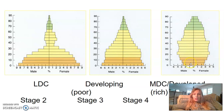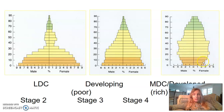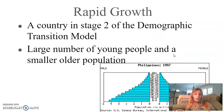In stage four — a wealthy MDC — the pyramid can be barely growing with a small bottom but slow growth, and a wide middle and top reflecting high life expectancy, as seen in the United States. It could also be completely rectangular, representing zero growth, or an inverted triangle representing negative population growth — a shrinking population.